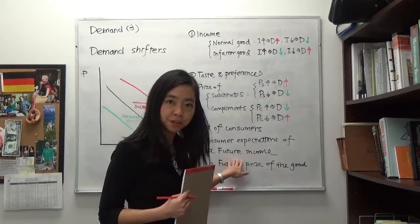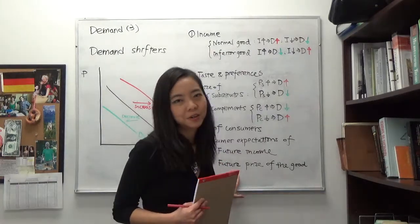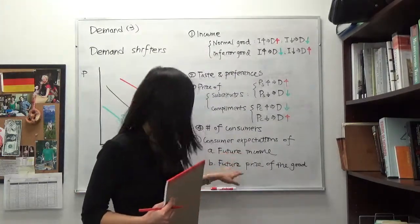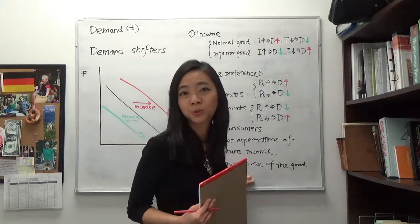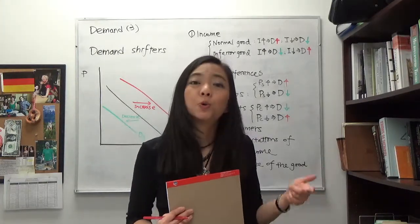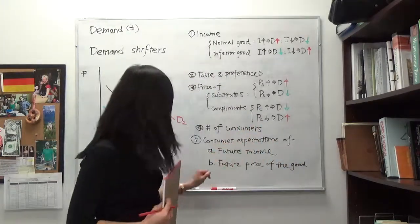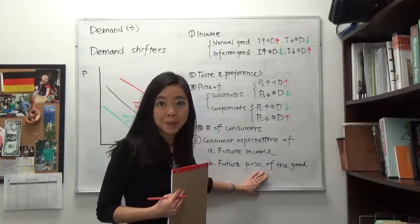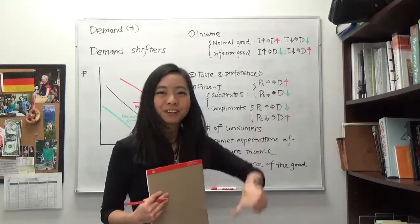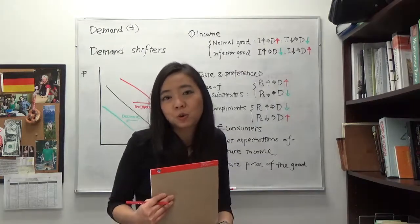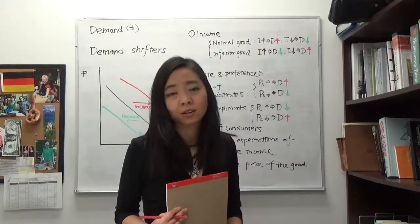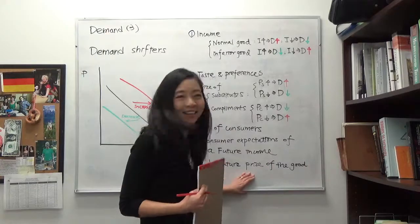What about expectation of the future price of a good? Suppose you're driving and your tank is half full, and you expect gas prices to go up next week — maybe there's a hurricane coming. You'll say: I better go fill up my tank now before the price goes up. So if you expect the future price of a good to go up, your demand is going to go up now. However, if you expect the price to go down next week, you might wait even with only a quarter tank, wanting to buy when the price drops. So your demand for gas now is going to go down.